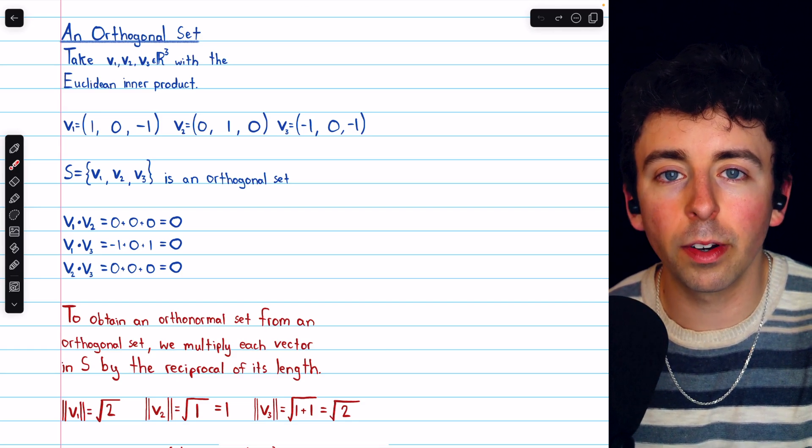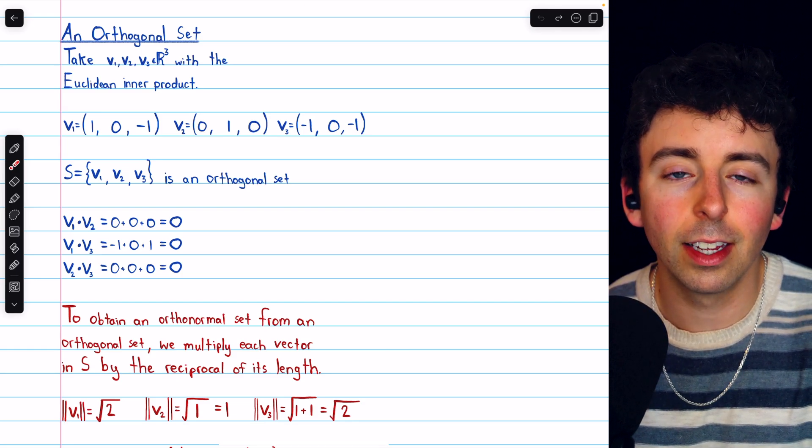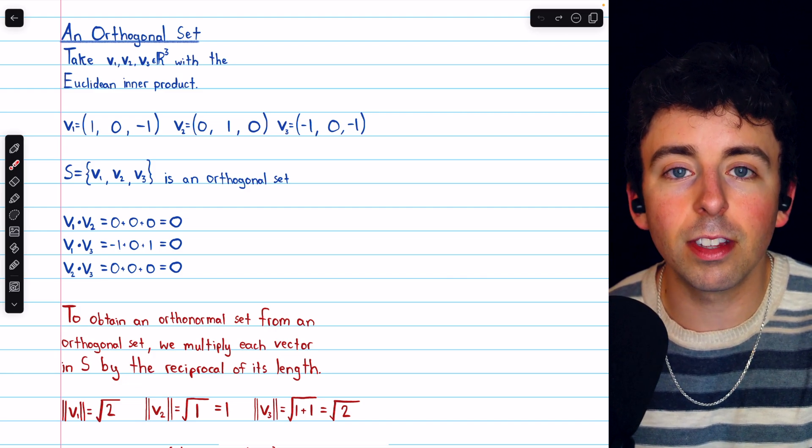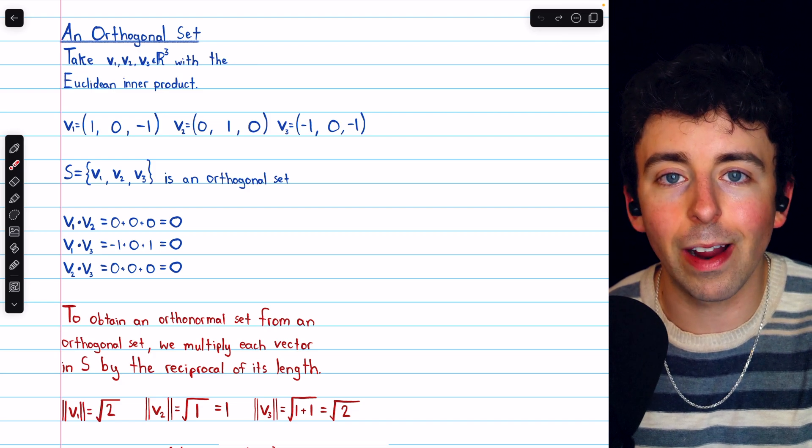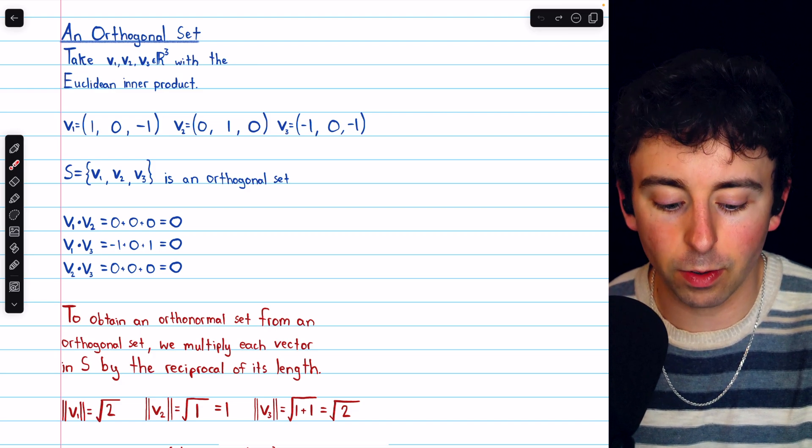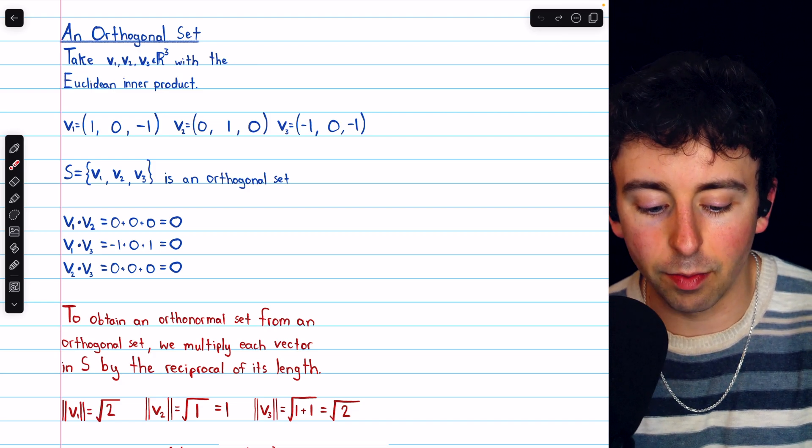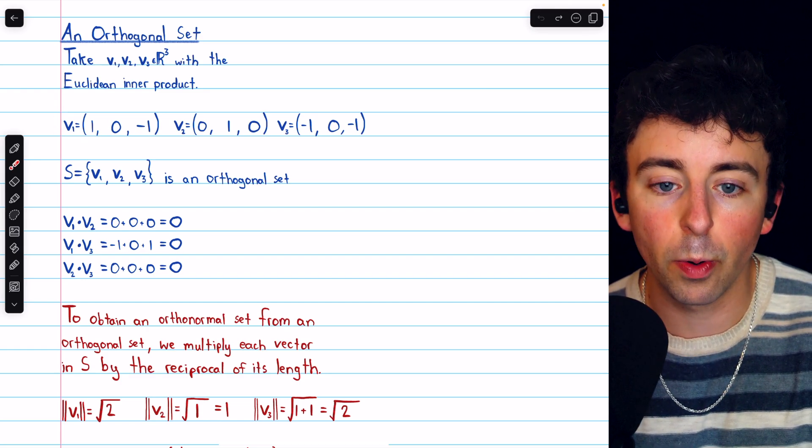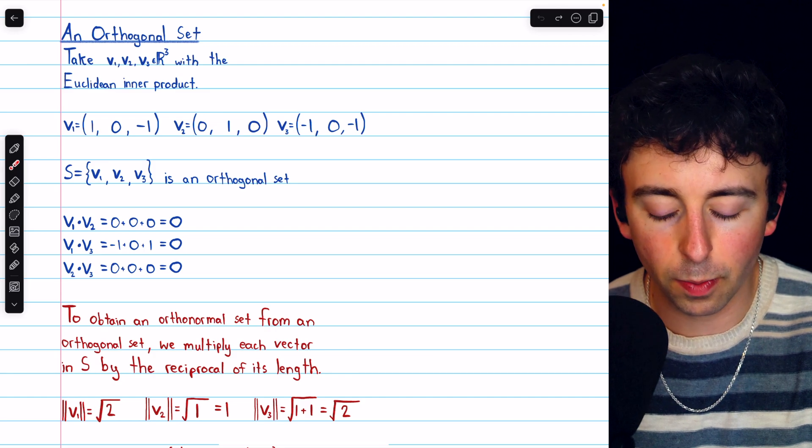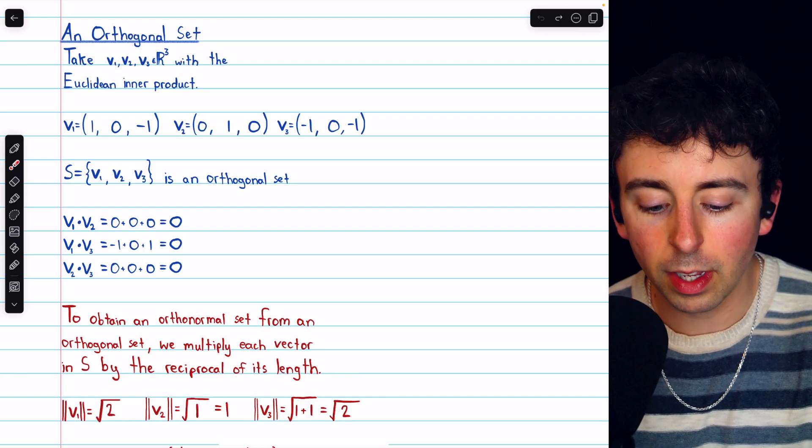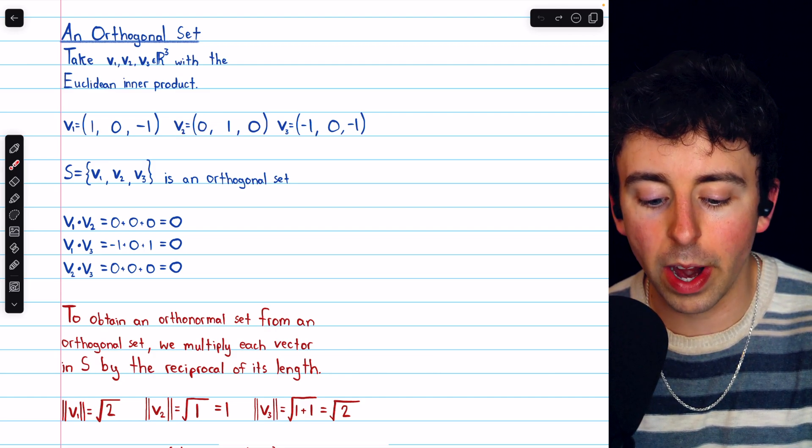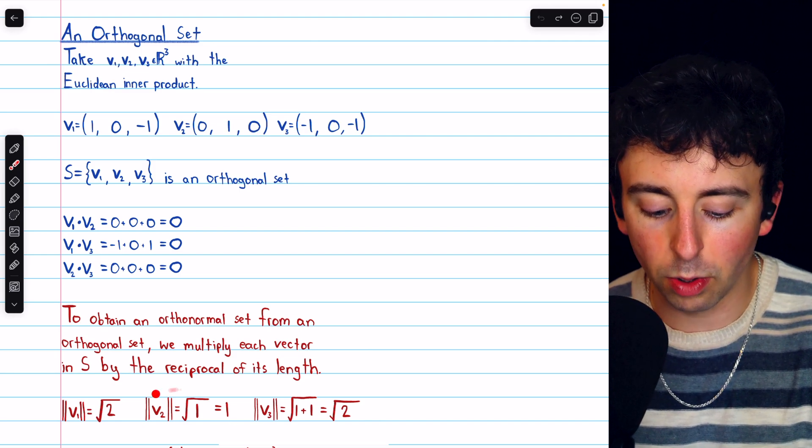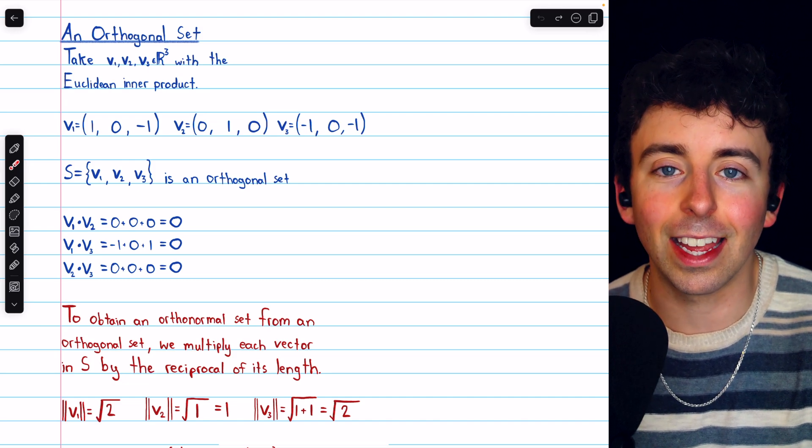To do that in this example, of course, we need to calculate those lengths. The length of a vector in the Euclidean inner product space R cubed is just the square root of the sum of the squares of the components of the vectors. So the length of V1, for example, is the square root of 1 squared plus 0 squared plus negative 1 squared. That's the square root of 2. The length of V2 is the square root of 0 squared plus 1 squared plus 0 squared, which is just 1. So this vector actually is already a unit vector.